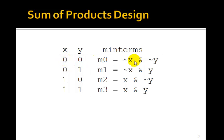If you have a 0 here, you NOT it. If you have a 1, you don't NOT it, and you AND them all together. So m0 is just NOT x and NOT y. M1 is just NOT x and y. M2 is just x and NOT y, and m3 is just x and y. So they're very easy to remember.